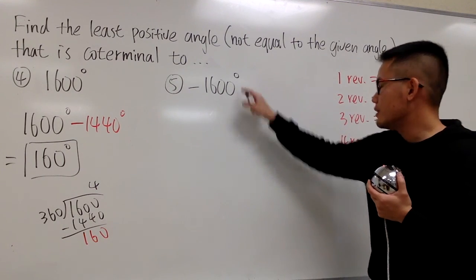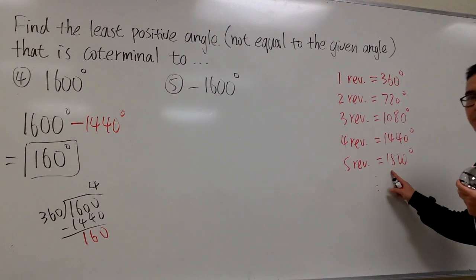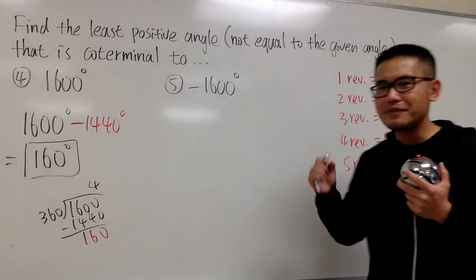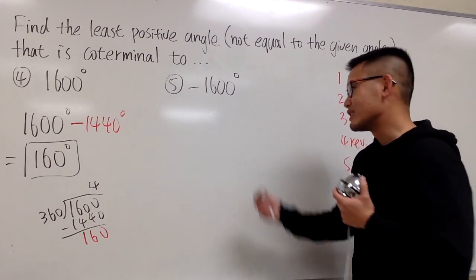Negative 1600, if I add it with positive 1800 degrees, the result is going to be positive 200 degrees. And we're done. That's all I have to do.